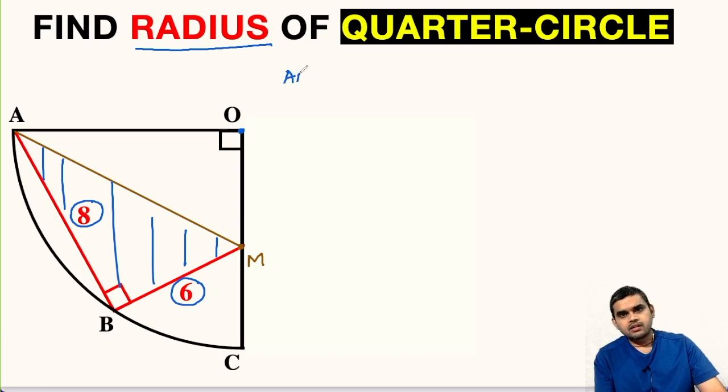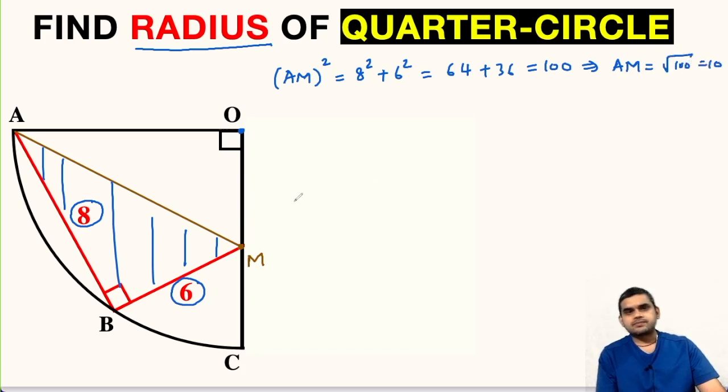So we can apply Pythagorean theorem here. So hypotenuse, that is AM squared, will be equal to 8 squared plus 6 squared. This will be 64 plus 36, that is equal to 100. So from here we will get AM equals square root of 100, that is 10 units. So we can mark it here as 10 units.